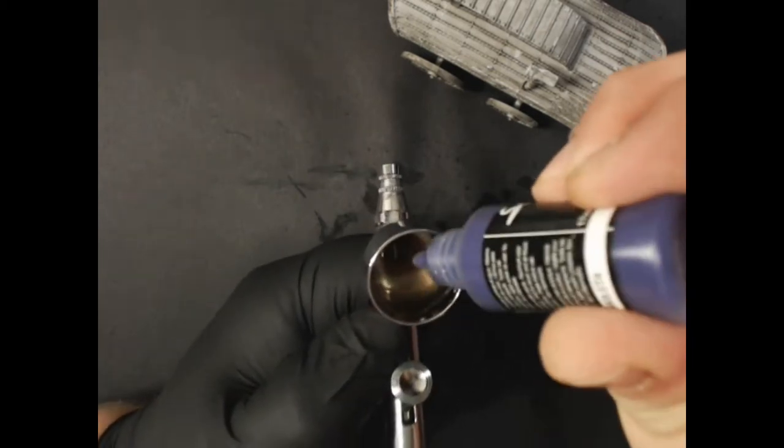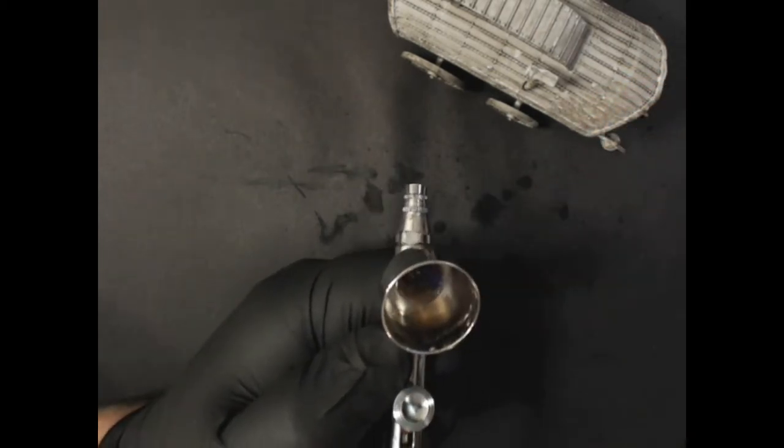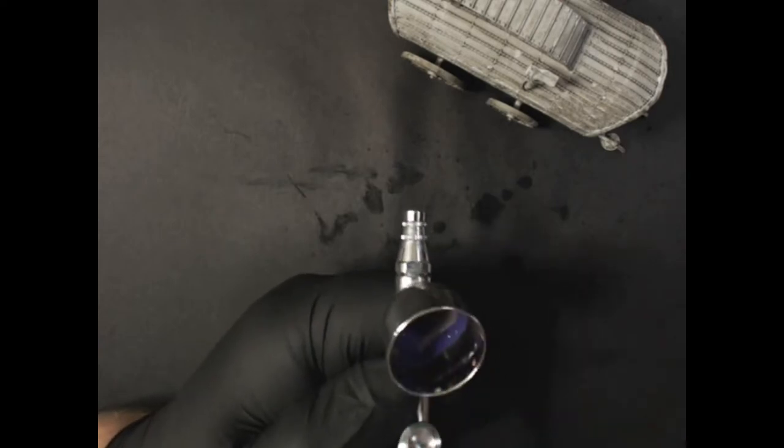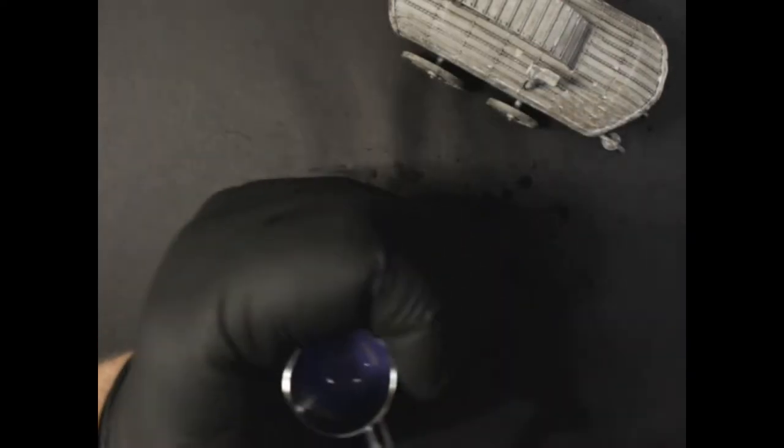Now we're going to break out the airbrush and do some Scale 75 Violet. So I put a little flow improver in the airbrush about 50-50 with the paint, stirred up with the brush. And make sure you turn your air compressor on before you do this, which I forgot to do.